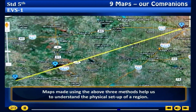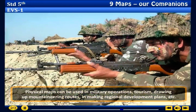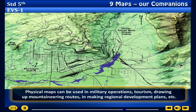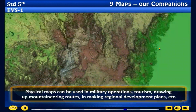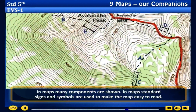Maps made using the above three methods help us to understand the physical setup of a region. Physical maps can be used in military operations, tourism, drawing up mountaineering routes, and in making regional development plans.